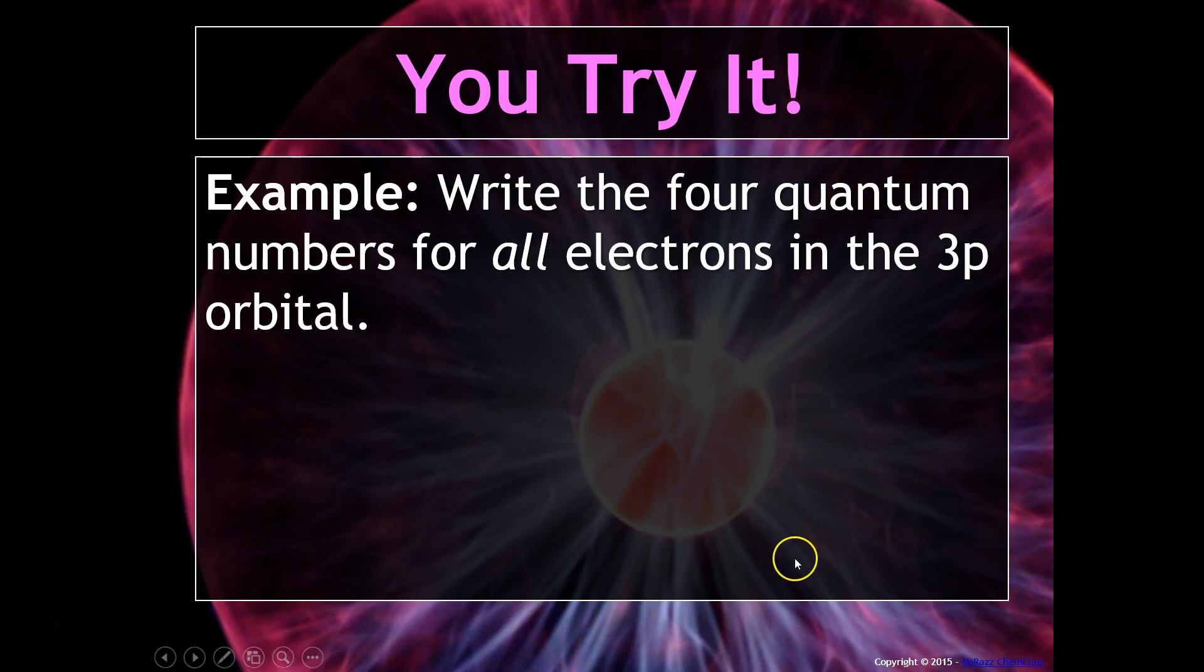This is the part where I recommend that you try this. And so if you want, I would encourage you to pause it and try this one on your own and then see if you get it right. Hopefully you did that. So if you wanted to write the four quantum numbers for all electrons in the 3P orbital, let's dissect this a little bit. It's 3P. So we're talking about N has to be 3 for all of these. Since we're talking about P, that means that L has to be 1 for every single one of these. And then when you split it up into all the different orientations, you could have minus 1, 0, or plus 1.